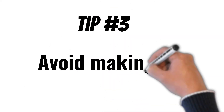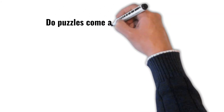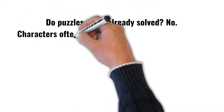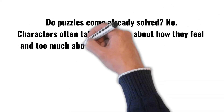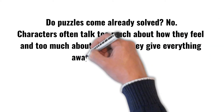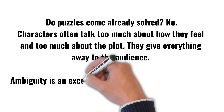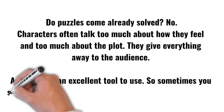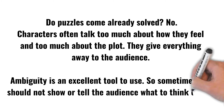Tip number 3: avoid making it obvious. Do puzzles come already solved? No. Characters often talk too much about how they feel and too much about the plot, giving everything away to the audience — that's not fun. Ambiguity is an excellent tool to use for this. Sometimes you should not show or tell the audience how to feel; let them figure it out on their own.